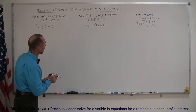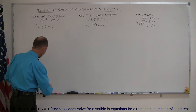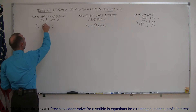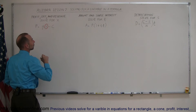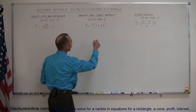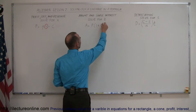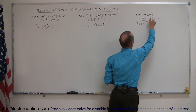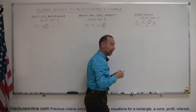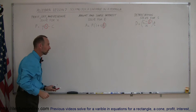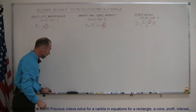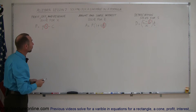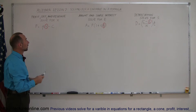In each case we need to solve for variables, so let's circle the variable we're looking for. Here we're going to solve for x, here for t, and here for s. How do we do that? At first it looks a little daunting, but if you follow the simple principles, it's not so bad.